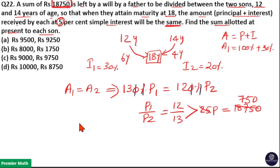So, 1 part is equal to 750 means 12 parts is equal to 12 into 750. 750 into 10 is equal to 7500. 750 into 2 is equal to 1500. So, 7500 plus 1500 is equal to 9000.